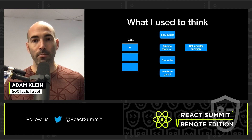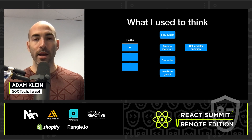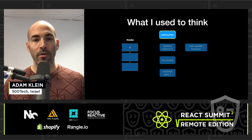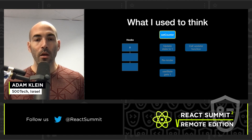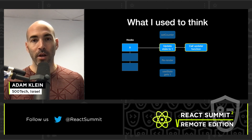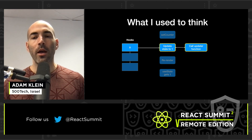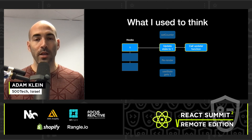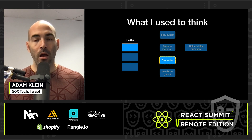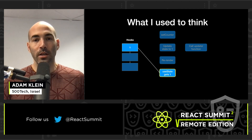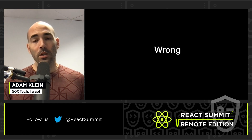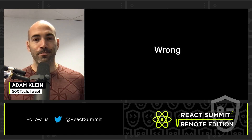You probably know that React manages the state of hooks outside of the component. What I used to think happens is: we call setCounter, React takes the current state of the hook — in our case zero — calls our update function which returns one, updates the state to the new value, re-renders the component, and the render function calls useState which gets the new value. This is pretty straightforward — except that it's wrong.